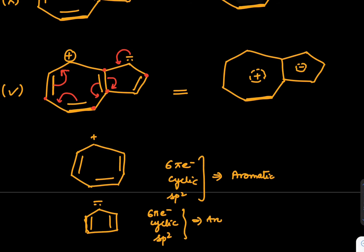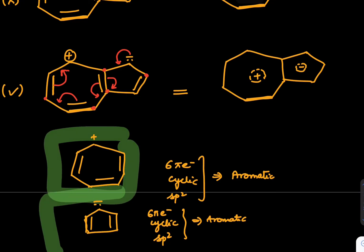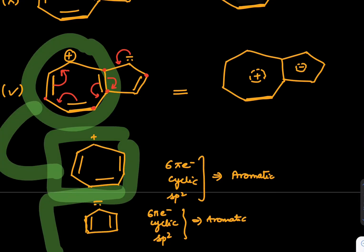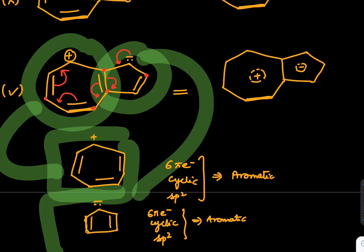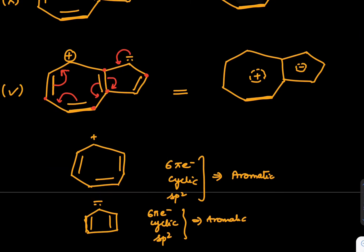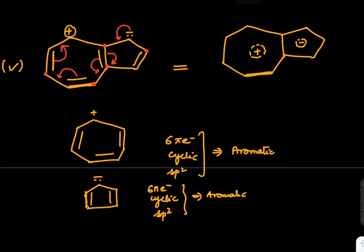So this is a simple trick: if these two things are individually aromatic, if you see this structure it is resembling with this, and if you see this structure resembling with this, then you can conclude that the whole structure is aromatic. Both the rings are aromatic, hence the overall structure is also known as aromatic.